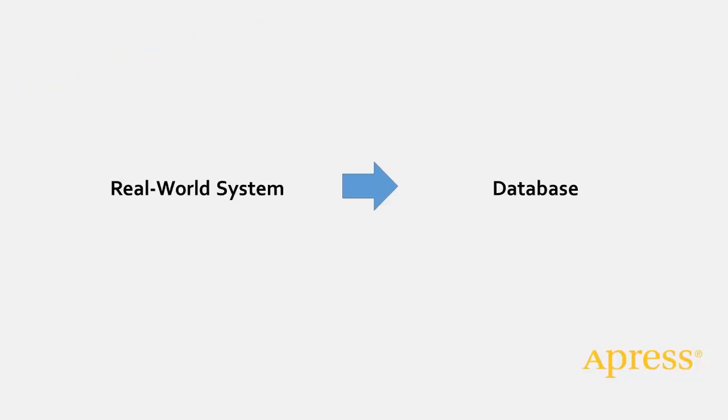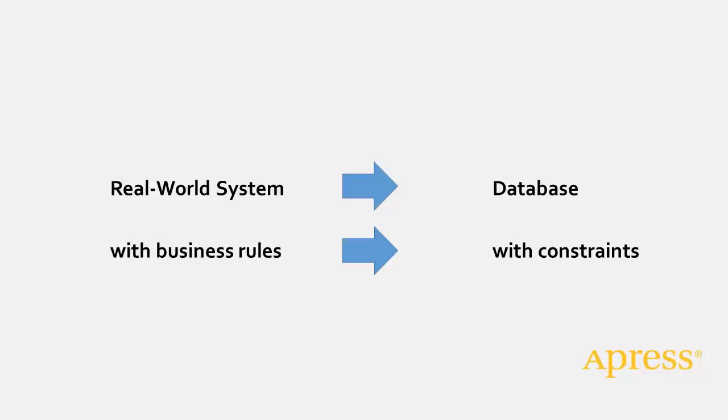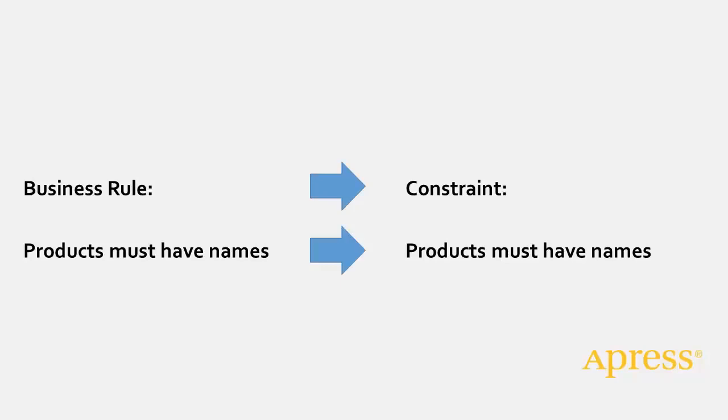If you want to create a database that corresponds to and records the transactions of some system in the real world, such as a business or other type of organization, you must enforce the same rules in the database as those that apply in the real-world system. For example, if you're tracking a company's products and the product has a name in the real world, then the entry in the database for that product must also have a name.